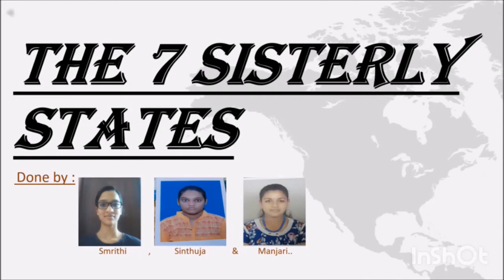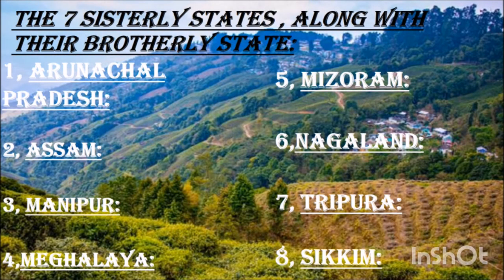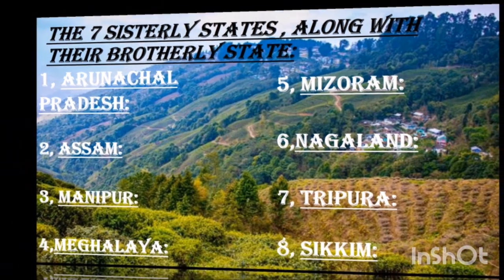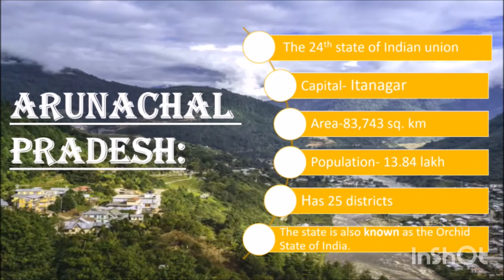Good morning everyone. Now you will be seeing the geographical part of the seven sister states. The seven sister states are Arunachal Pradesh, Assam, Manipur, Meghalaya, Mizoram, Nagaland and Tripura. Recently, Sikkim has been named as the brotherly state of the seven sisters. Arunachal Pradesh is the 24th state of India, often called the 'Dawn Lit Mountains.' It is the largest of the seven states with 83,700 square kilometers. It has an international border of 1,600 kilometers with China, Myanmar and Bhutan. Its population is 13,24,000. The state is also known as the orchid state of India because of the abundance of beautiful orchid species.